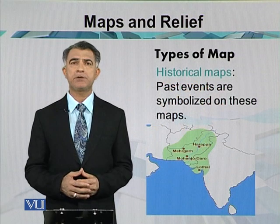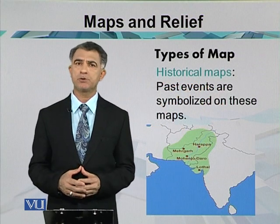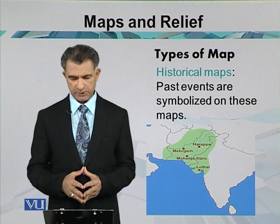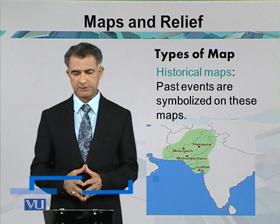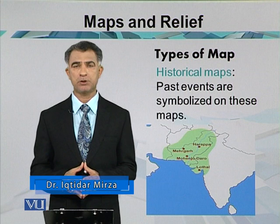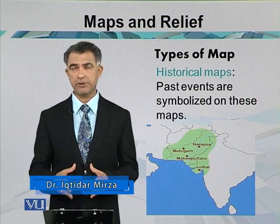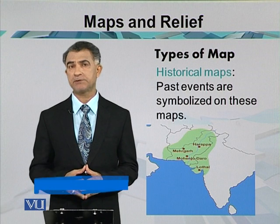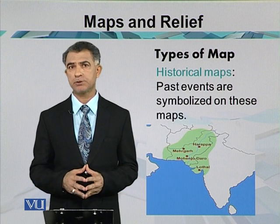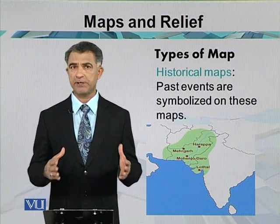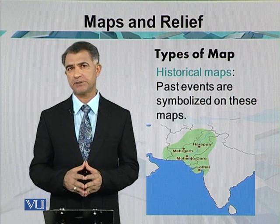The next category according to purpose is the historical map, where past events are symbolized and shown on the map. Here we have the best example of the Indus Valley civilization, where the green color shows the spread of the civilization and its regional movement.